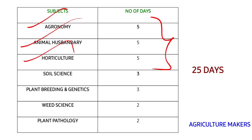Coming to soil science and plant breeding and genetics, I have provided three days each for those subjects. They are also important subjects containing a lot of content, so I have provided three days each. In that time, you have to read everything and must revise it. Remember, I have given an ample amount of time to read and revise everything, so plan accordingly and don't waste your time.